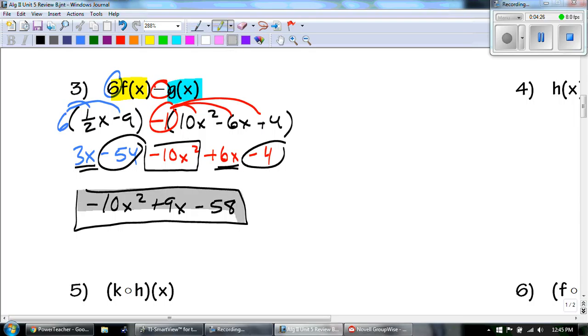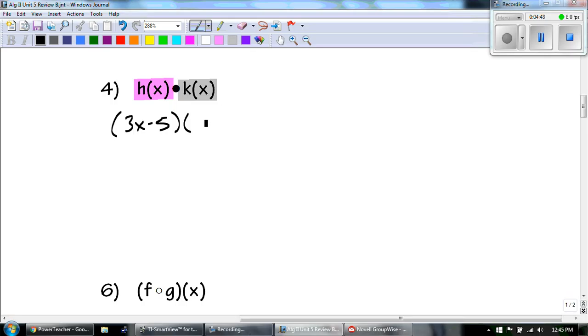We're looking for like terms. Negative 10x squared, he's going to go out front, he's our leading coefficient. 3x plus 6x is a 9x. And negative 54 minus 4 is a negative 58. So we get negative 10x squared plus 9x minus 58.